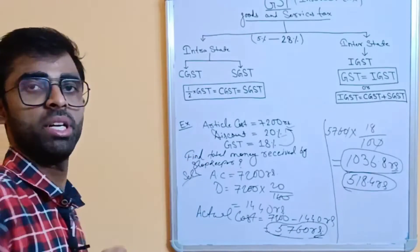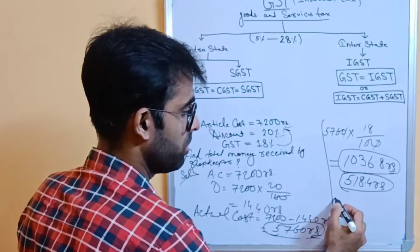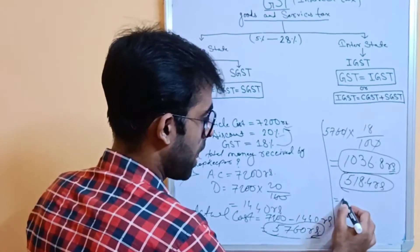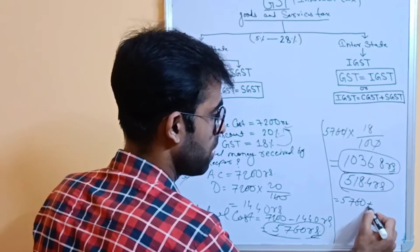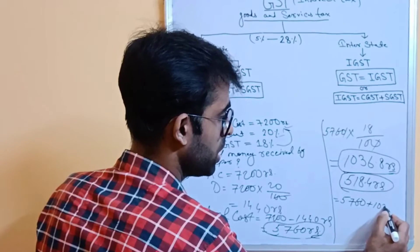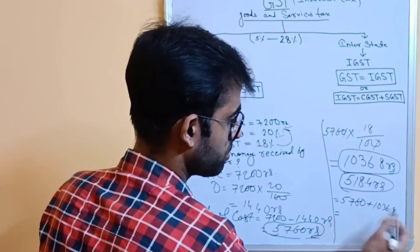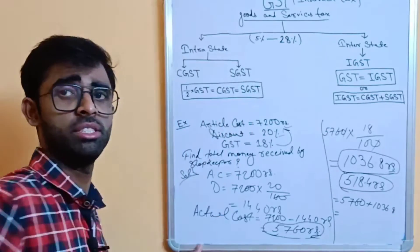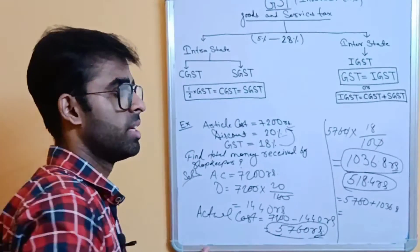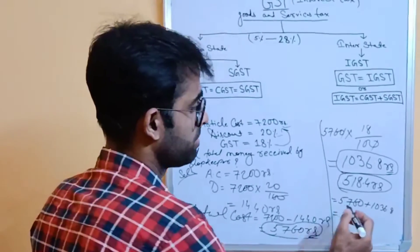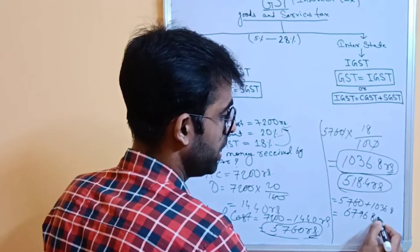So the final amount the shopkeeper receives from the person is 5760 plus 1036.8 rupees. Just calculate this value. After calculating this value, you will get 6796.80 rupees.